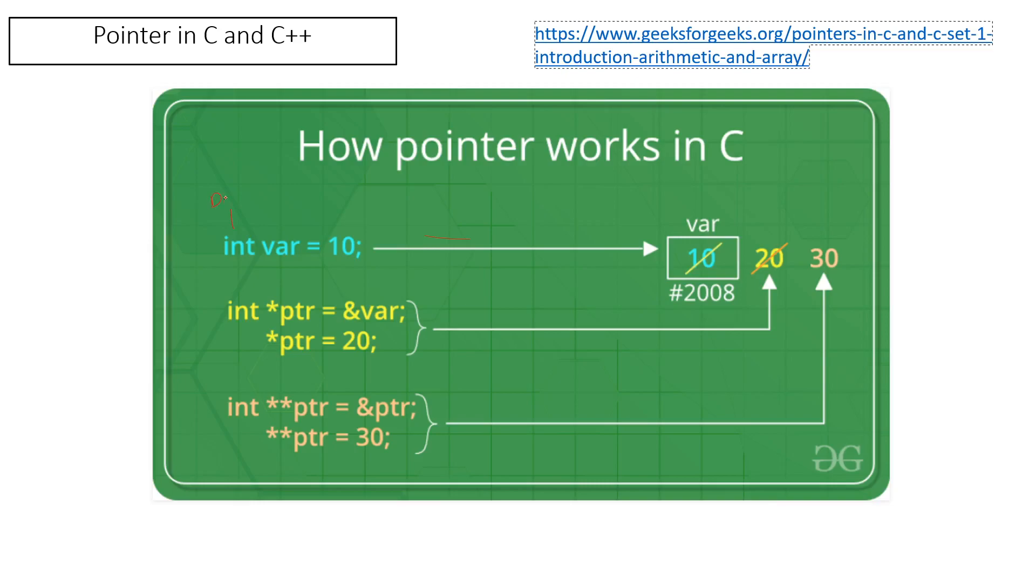Here we have the same data type, the name of the variable, and the value. This goes to a memory allocation, so this is the address of the memory.